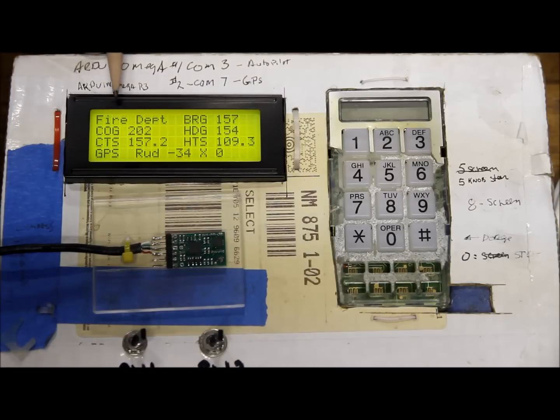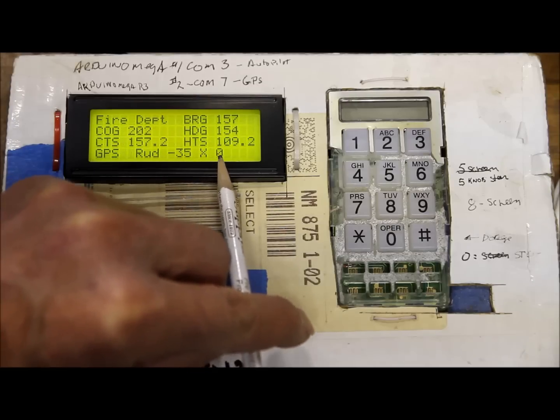So in this mode we have the fire department as our go-to waypoint. Its current bearing is 157. The GPS is reporting a course over ground of 202 which is not correct because we're not physically moving. The course to steer is being calculated as 157. That's the same as the bearing. And right here is cross track error.